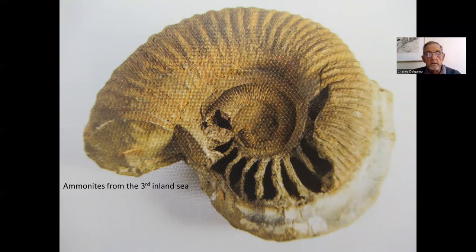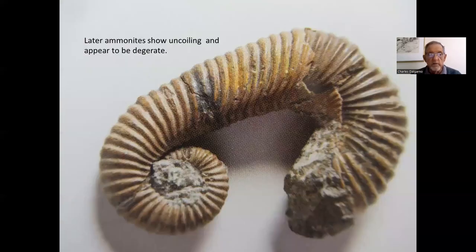Some of the marine fossils — particularly, in this case, from the third inland sea — include an ammonite. Some of the later ammonites show uncoiling, possibly degenerate. There is a huge array of ammonites, which are of course a very significant marker fossil throughout the rest of the globe.